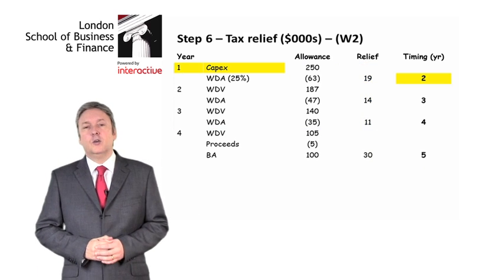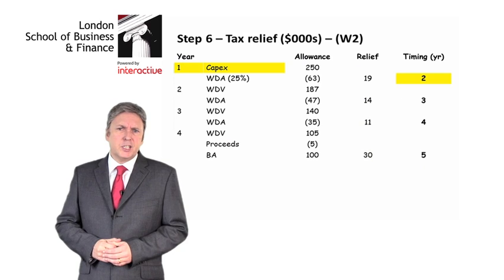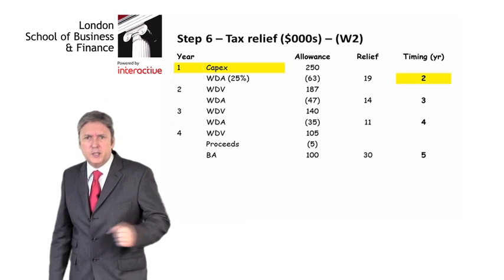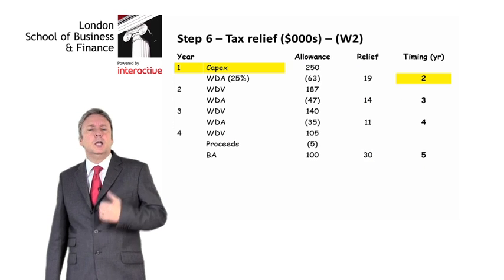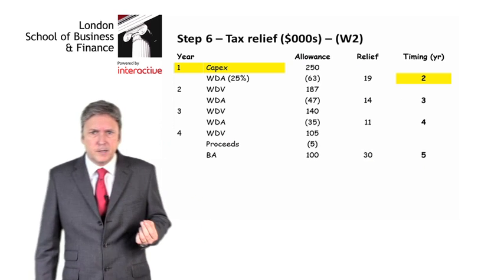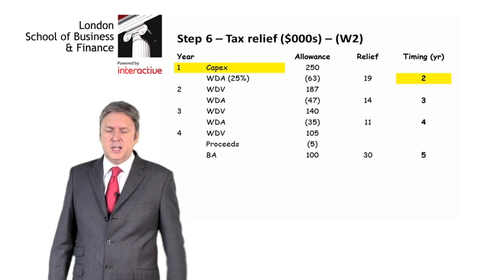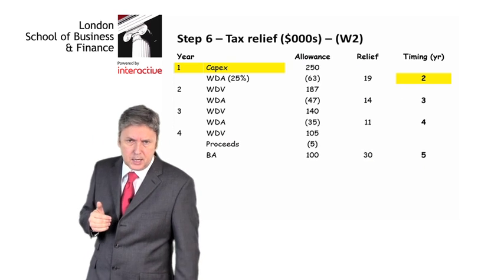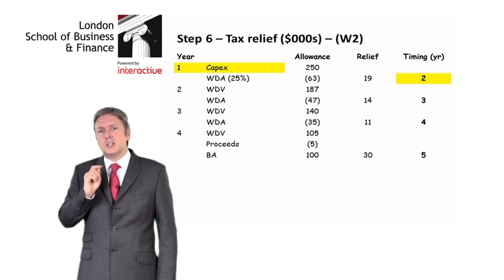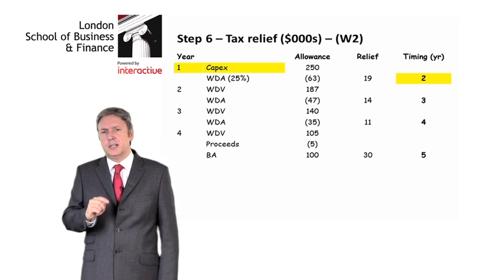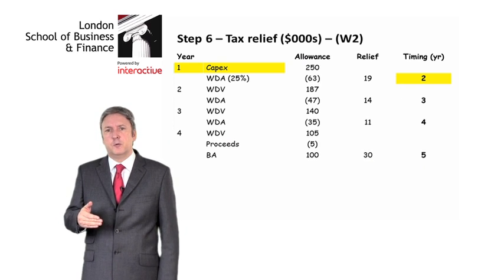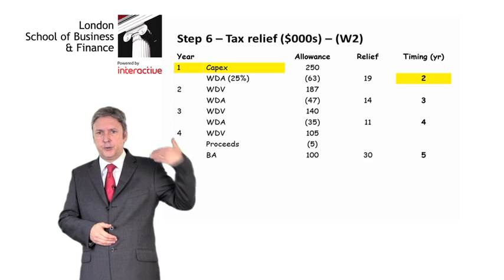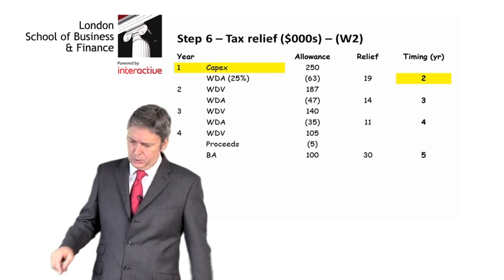Critically, we have to look at timing. Your examiner always does the same thing here, and I like to copy the examiner — imitation is the sincerest form of flattery. The investment is in year one from a tax perspective, and we are told that tax is one year in arrears. Therefore, the first tax relief will be in year two. If you get the first one right, numbering down — two, three, four, five — is not going to be difficult at all.